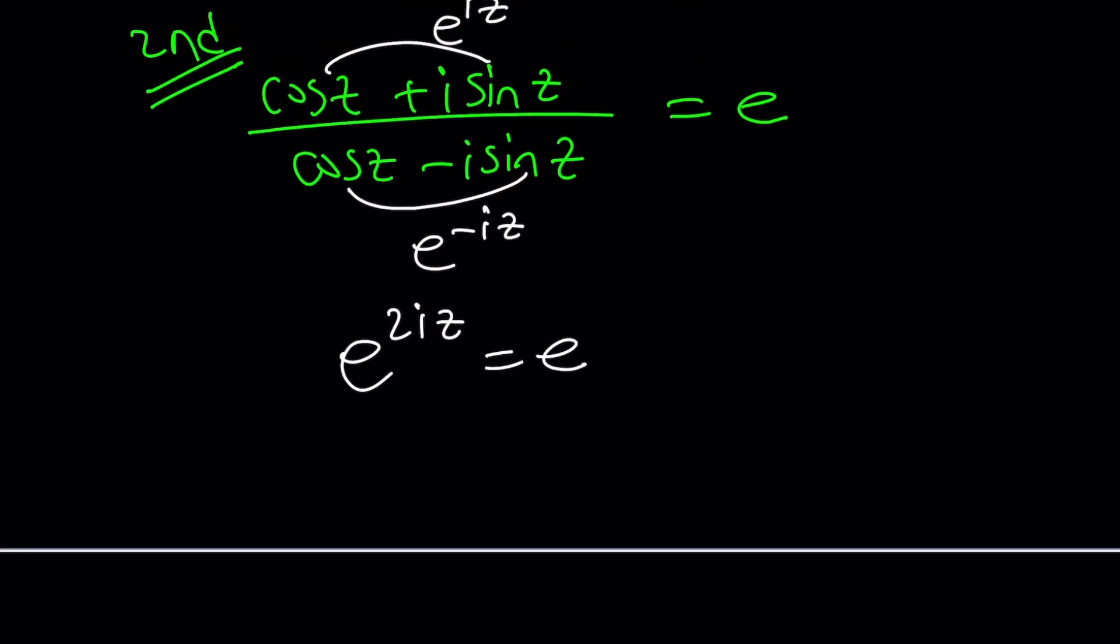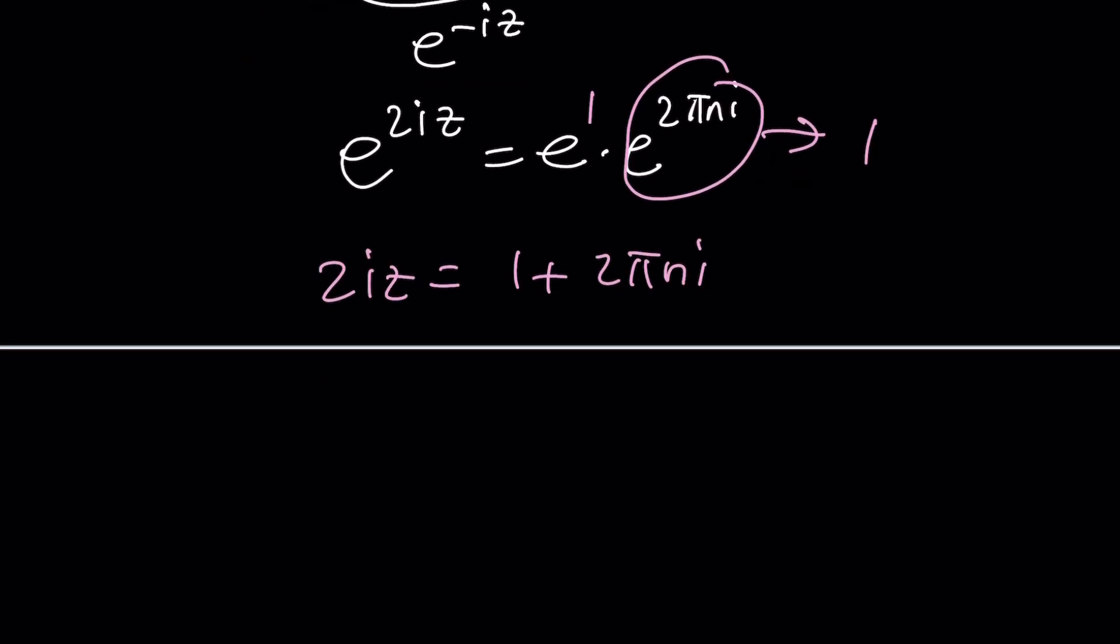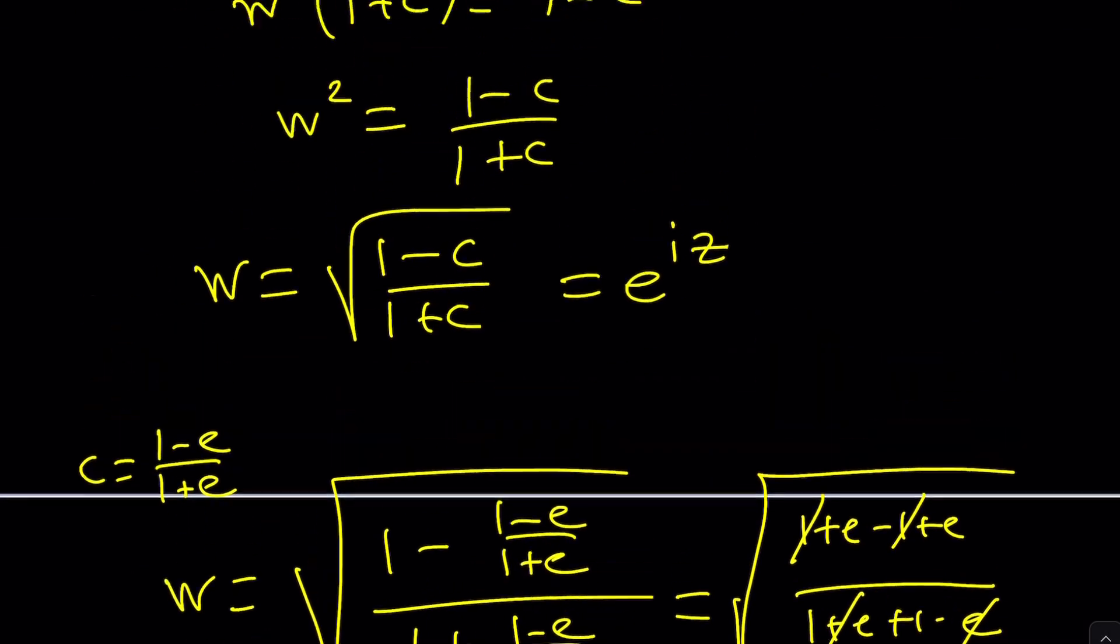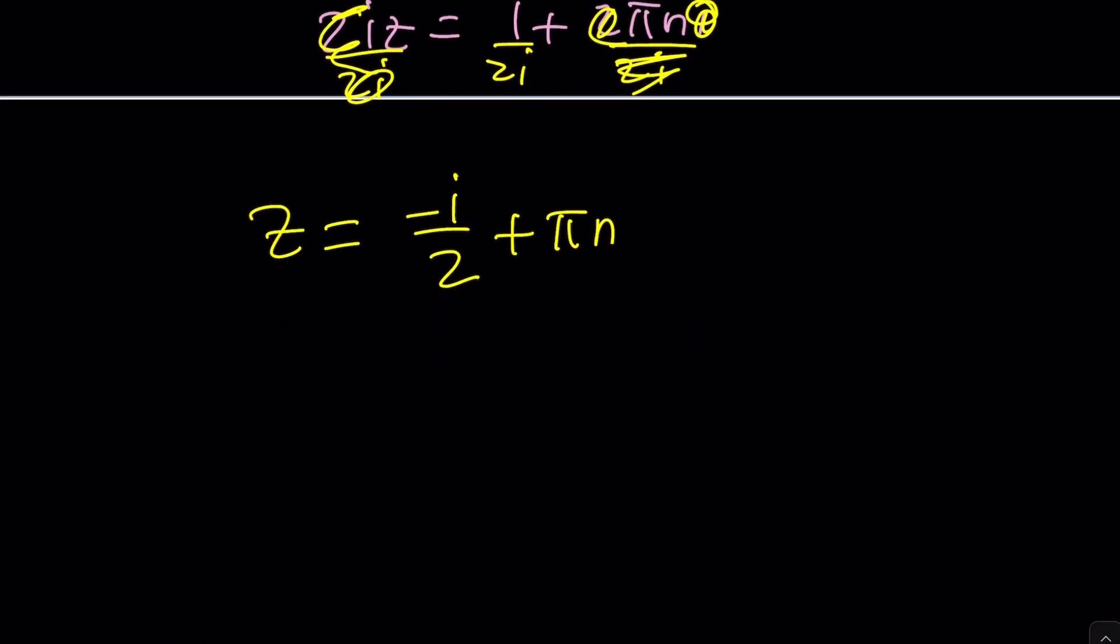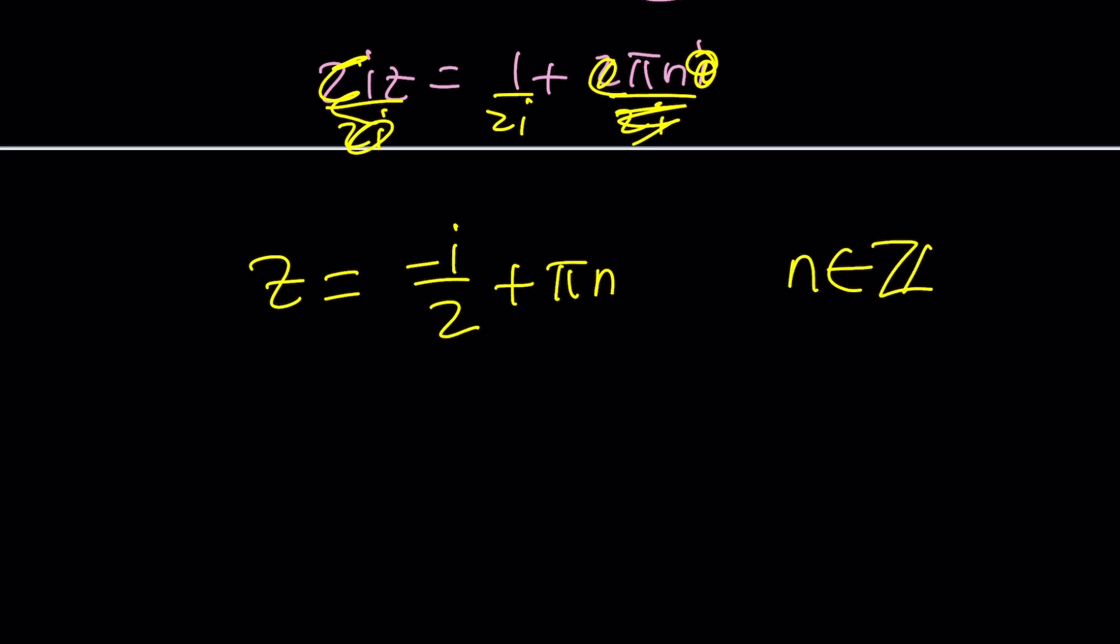But does this mean that 2iz is equal to 1? One of the things that you should always remember is we can always multiply one or two sides of an equation by e^(2πni). Because in the complex world, it's 1. So I'm allowed to multiply by 1. So this gives us the following: 2iz is equal to 1 plus 2πni. If you want to divide everything by 2i, you're going to get z. If you multiply by negative i, you're going to get -i/2 plus πn. So basically z, one of the solutions is -i/2. But that's just one of the solutions. n is an integer. You're going to get infinitely many solutions.